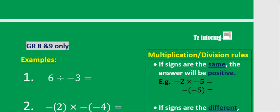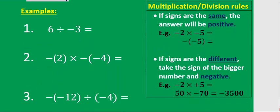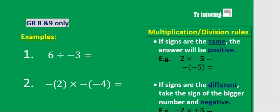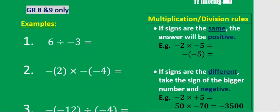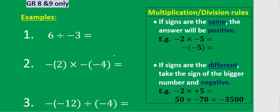Multiplication and division of integers is for grade 8 and 9 only. The rule is: if the signs are the same when multiplying or dividing, you get a positive answer. Negative times negative gives positive; positive times positive gives positive. So same signs always produce a positive answer.